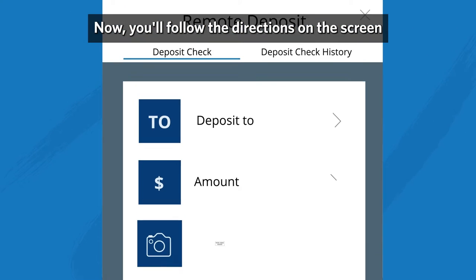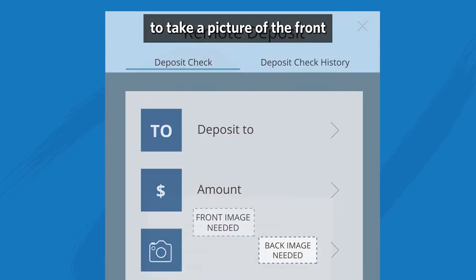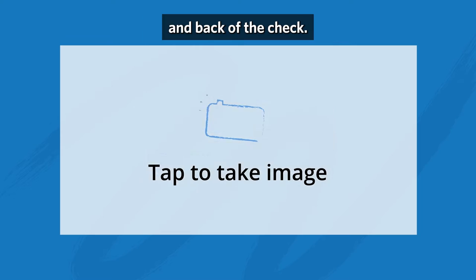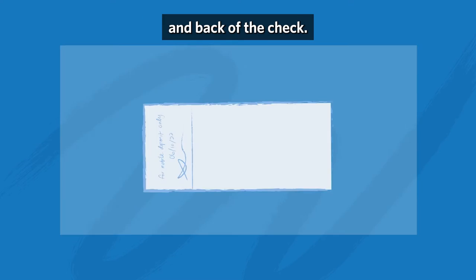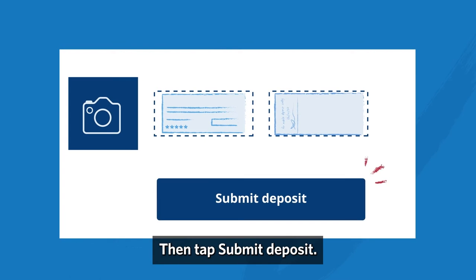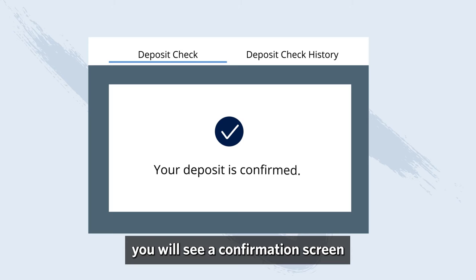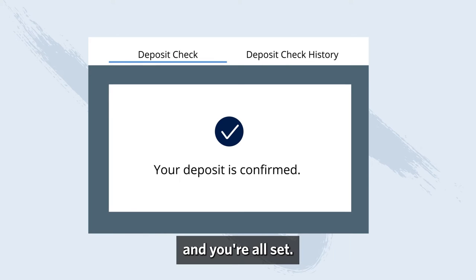Now you'll follow the directions on the screen to take a picture of the front and back of the check, then tap submit deposit. If everything is good, you will see a confirmation screen, and you're all set.